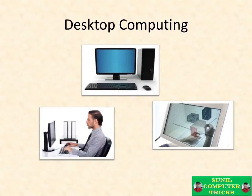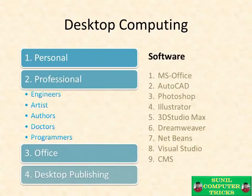First is desktop computing. Desktop is a single PC — an independent or individual PC used by one person. There is no network or internet connection to it. It can only work with a single PC and its installed software. This is for personal and professional use — office or desktop publishing. Professional authors, doctors, programmers, and engineers use it.